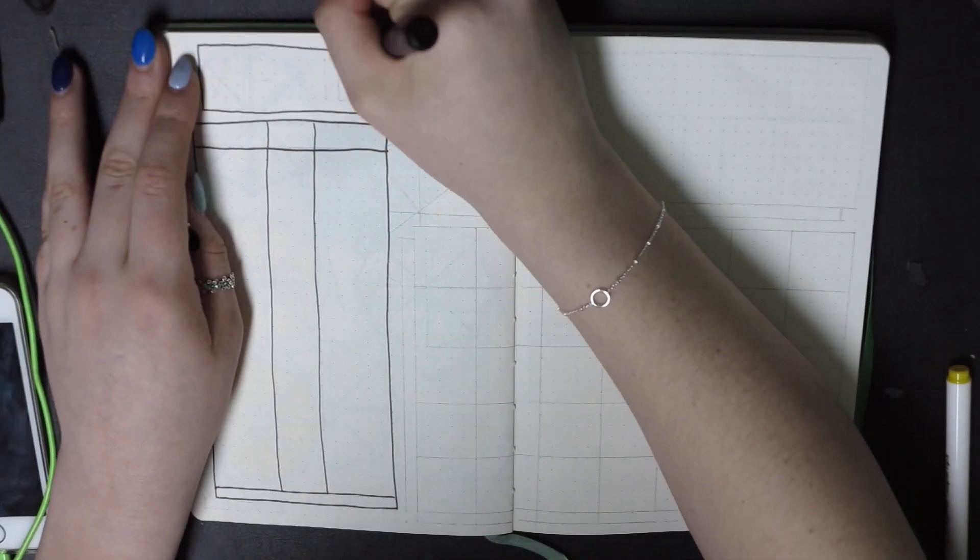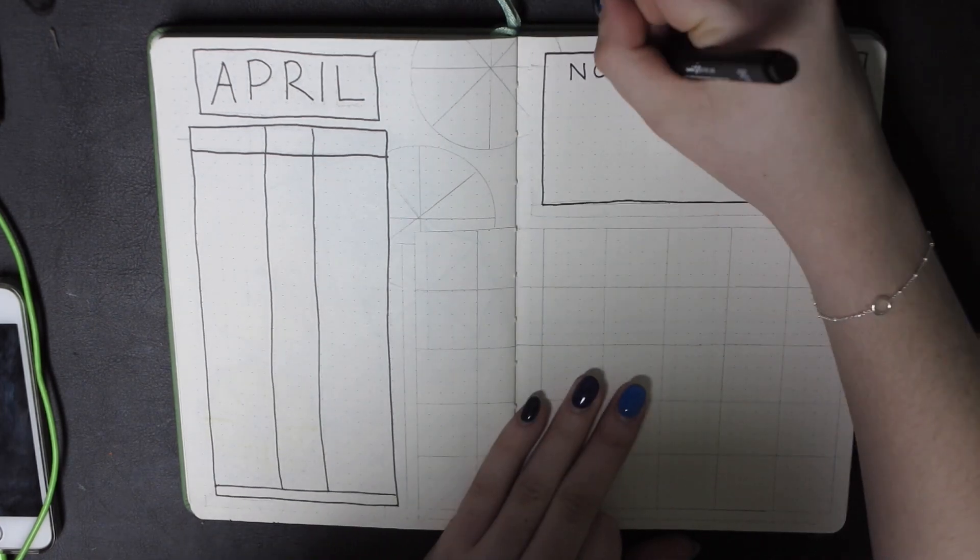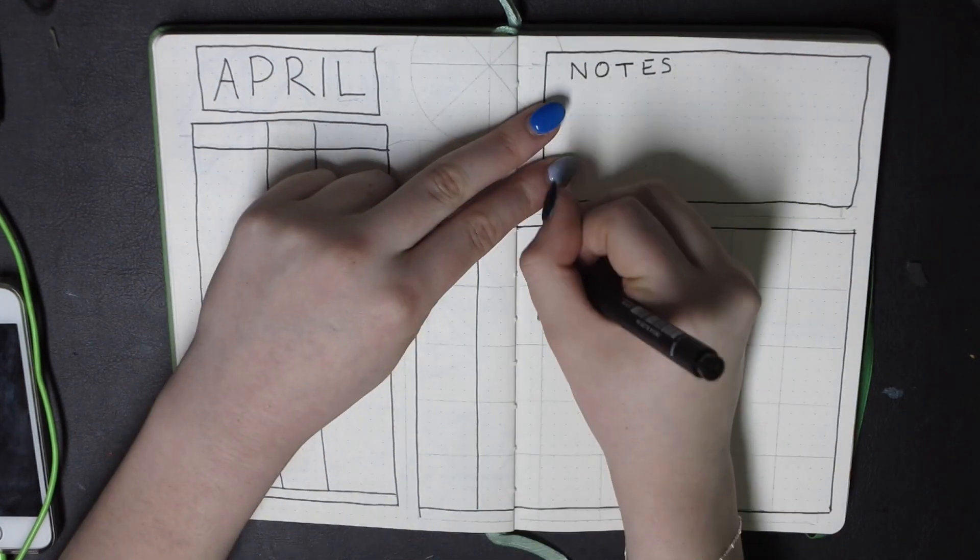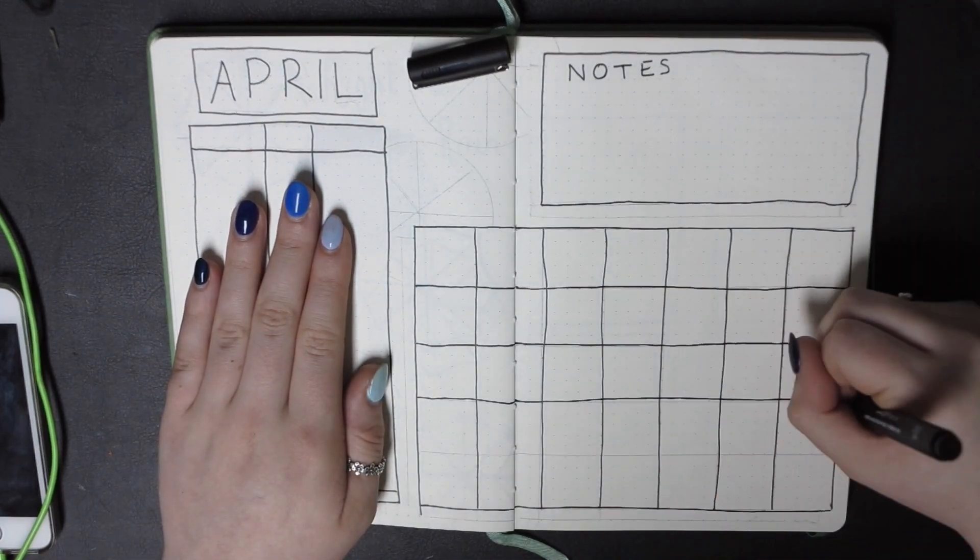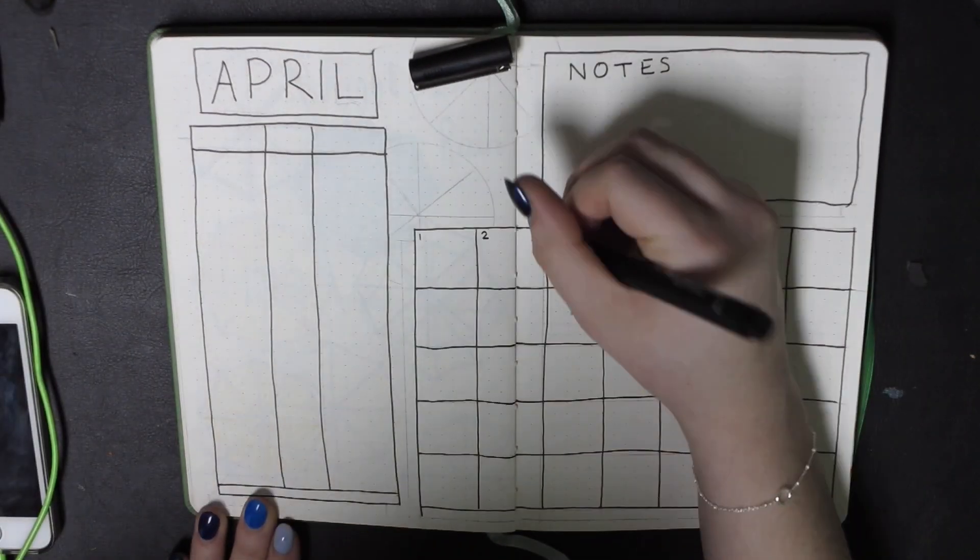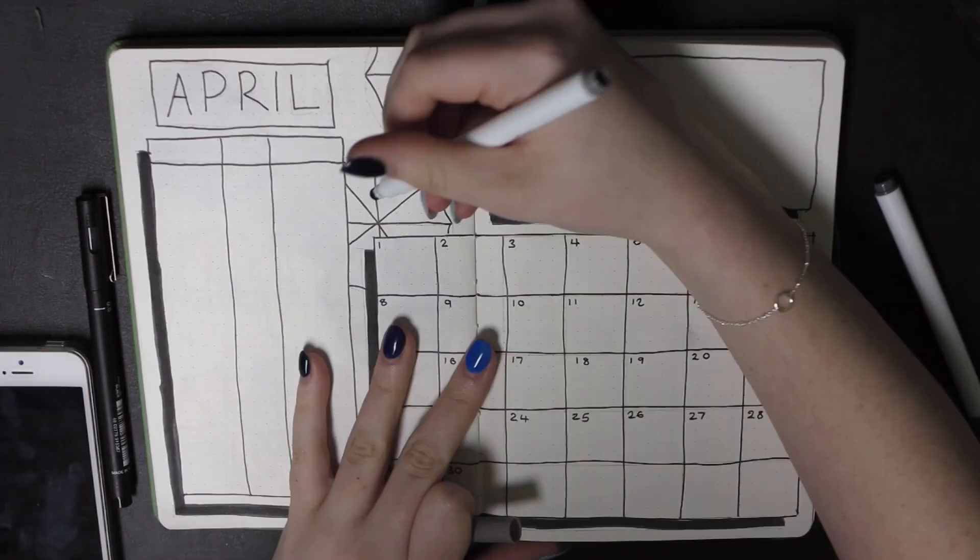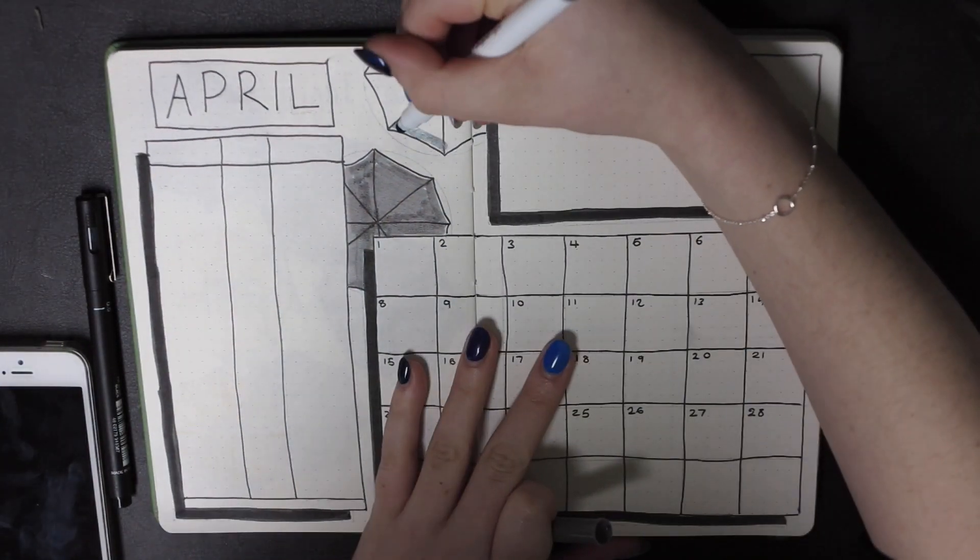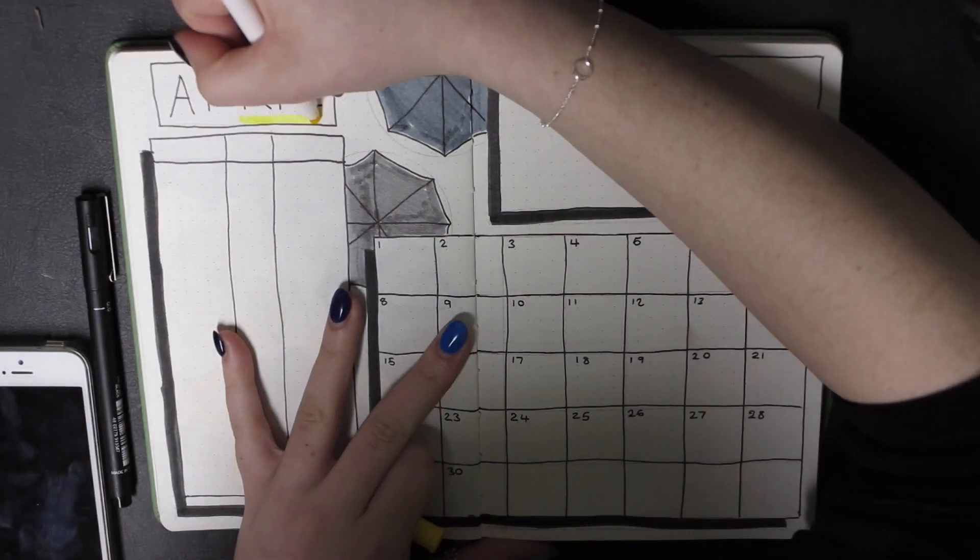I did my normal layout for this page. I wrote April at the top, I did my grid at the left hand side for my work, then I put notes at the top, and then I obviously put the calendar. Something slightly different that I did this time, but my camera didn't record, I put an underlay beneath the boxes to make it stand out a bit more, make it pop out the page. Then I coloured another two umbrellas in and coloured the April in yellow.